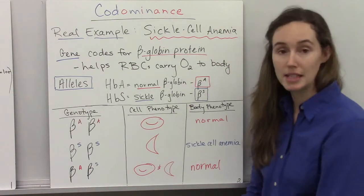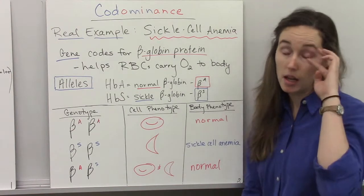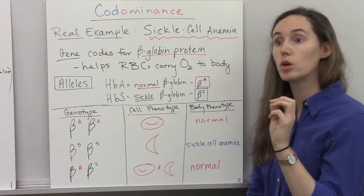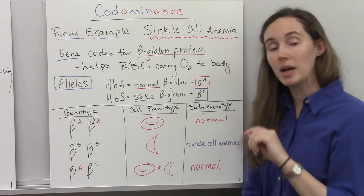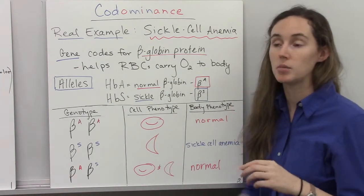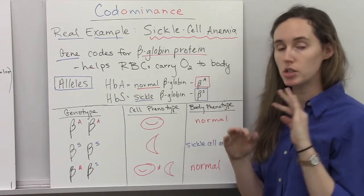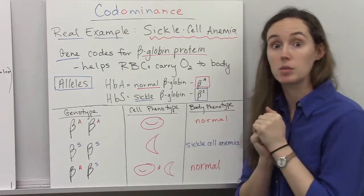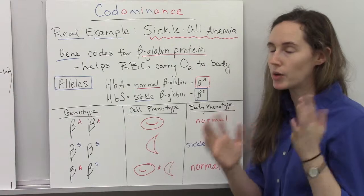A real life example of codominance is sickle cell anemia. Now, in other writings or videos, you might see sickle cell anemia exhibited as a basic dominant recessive situation. But I'll explain here how it's a little both.